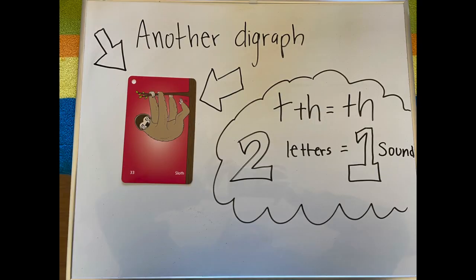Great job. Let's try another one — this is a different digraph. This digraph is the TH digraph. I take my two letters, T and H, and I put them together to make one sound. That sound is TH. So T and H together make TH.